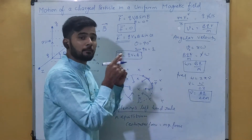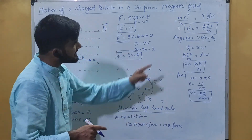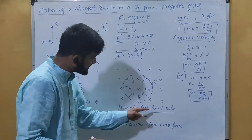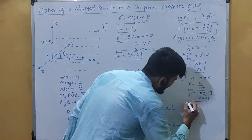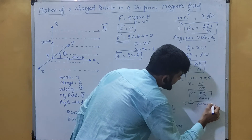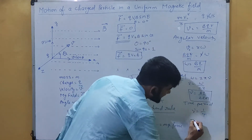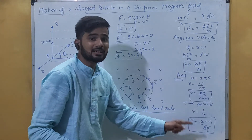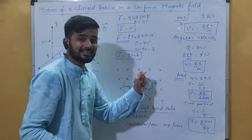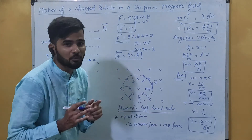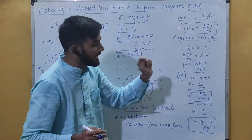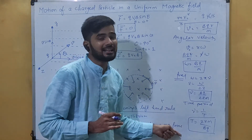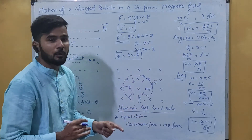From the frequency we can also find the time period. Using T = 1/nu, we get T = 2·pi·m / (Bq). So we have four important formulas: linear velocity = Bqr/m, angular velocity = Bq/m, frequency = Bq/(2·pi·m), and time period = 2·pi·m/(Bq). These are the four important formulas related to the motion of a charged particle in a magnetic field.